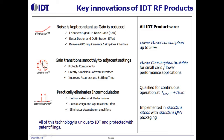Another advantage of IDT RF products is they are qualified for continuous operation at 105 degrees C. They are implemented in standard silicon with a standard QFN package. The IDT-F30 series utilizes glitch-free and zero distortion technologies.